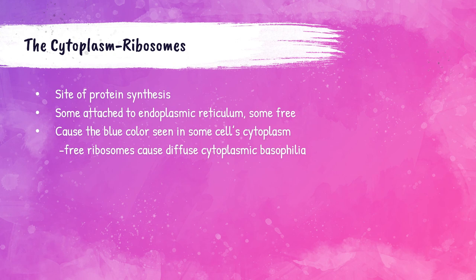Ribosomes are the site of protein production. Some ribosomes are attached to the endoplasmic reticulum, another organelle within the cytoplasm, and some are free floating. Ribosomes cause a blue color seen in the cytoplasm of some cell types.